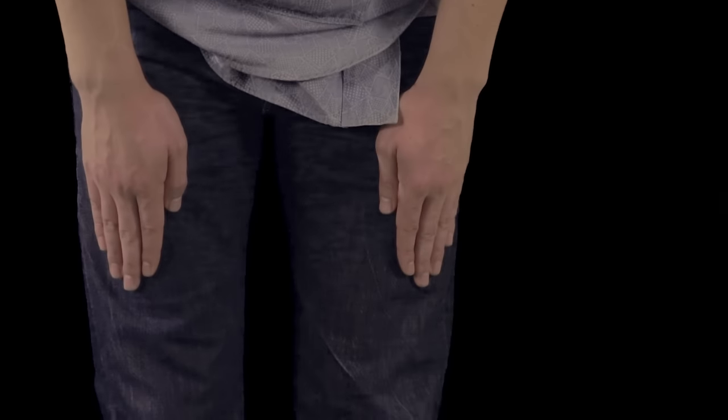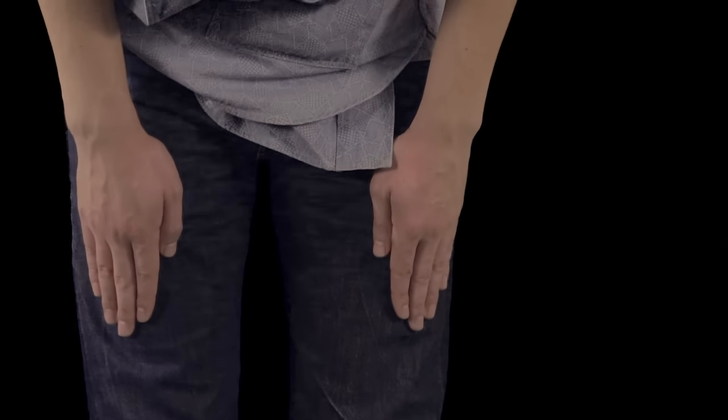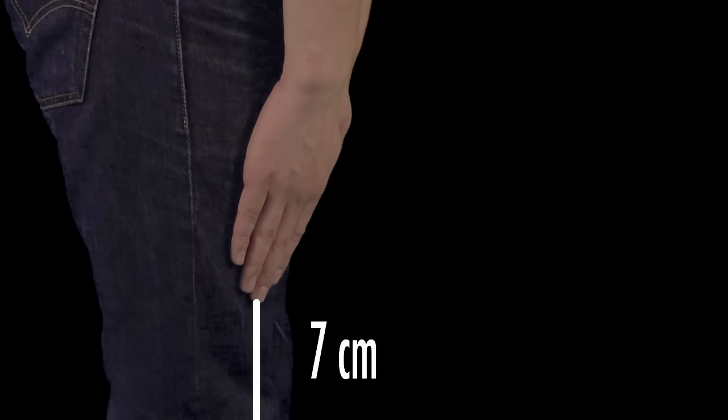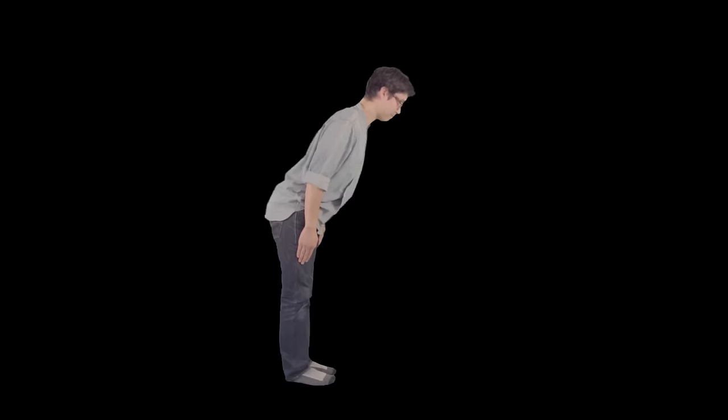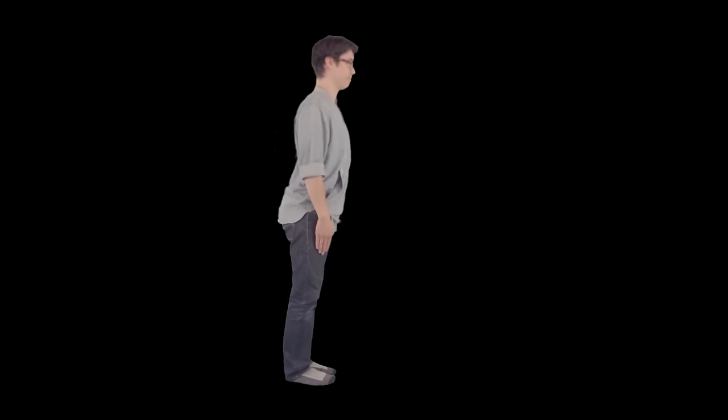At the same time, and at the same speed, he lowers his hands down the front of his pants, stopping 7 to 10 centimeters above his knees. Then he returns to Seiritsu over the span of one slow inhalation.